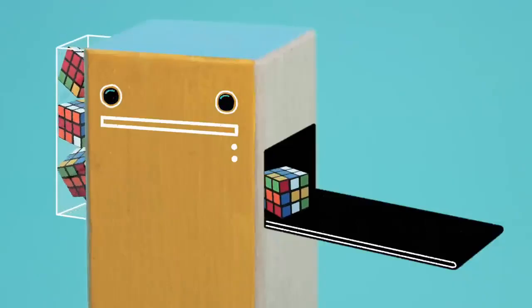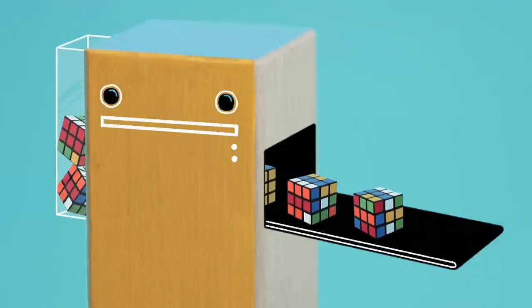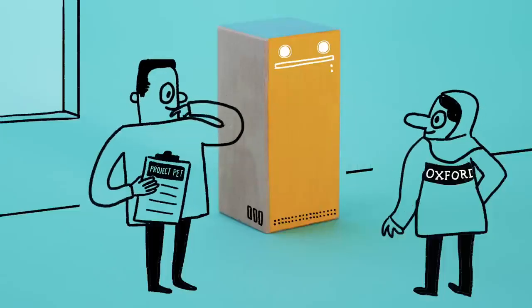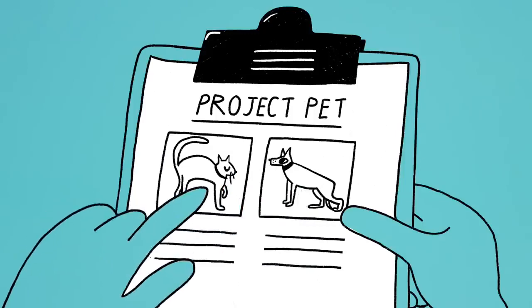Just as your brain uses experience to improve at a task, so can computers. Say you need a computer that can tell the difference between a picture of a dog and a picture of a cat.